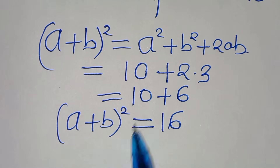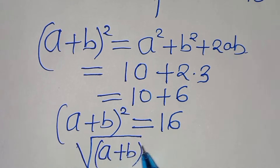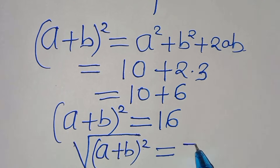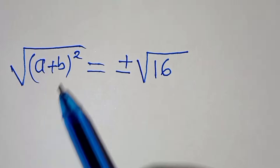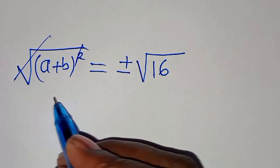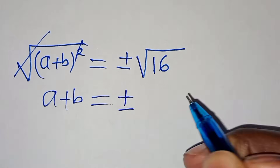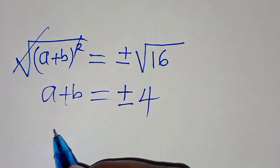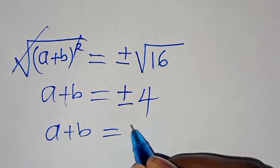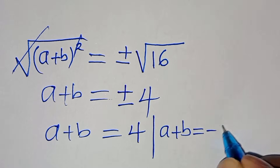To solve for a plus b, we take the square root of both sides: square root of (a plus b) squared equals plus or minus the square root of 16. This simplifies to a plus b equals plus or minus 4. So a plus b equals positive 4, and a plus b equals minus 4.